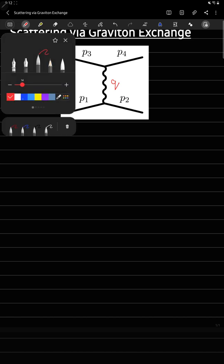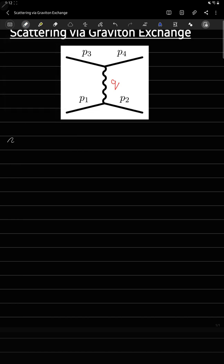Let's say it has a momentum of q. Now let's write down the amplitude of this thing. It's going to be negative iota M equals iota kappa over 2 times p1 mu p2 nu plus p1 nu p2 mu minus eta mu nu (p1 dot p2 minus m squared). This is for this first vertex.